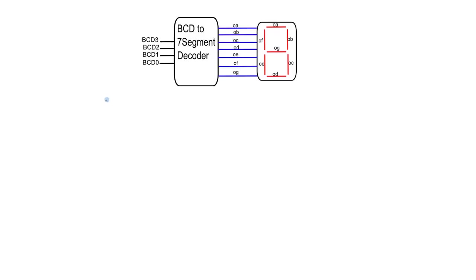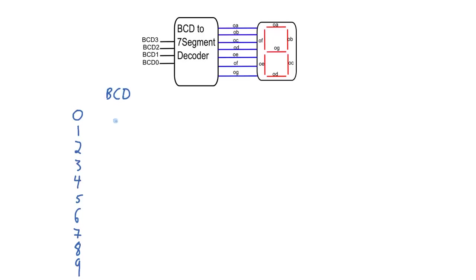A binary coded decimal, or BCD, is a system of using binary numbers to encode decimal numbers. We have the numbers from 0 to 9, and a BCD number is a four-bit number that corresponds to those numbers — it's simply the binary value using four bits. The difference between BCD and standard binary is that with BCD we can only represent the numbers from 0 to 9. For example, to represent 37 you would use the BCD number 0011 followed by 0111 for the three and seven respectively.